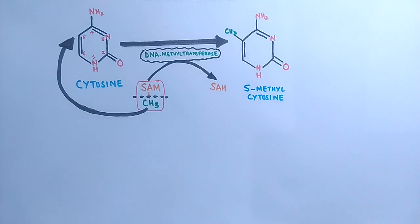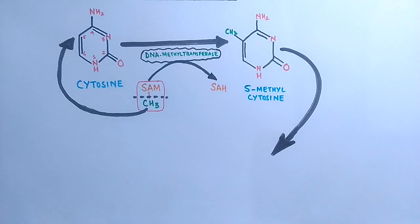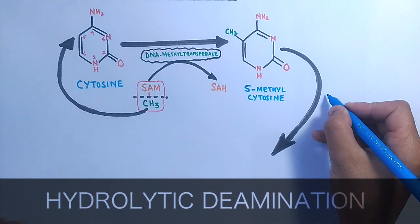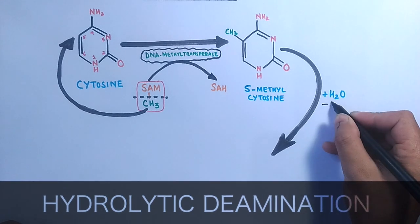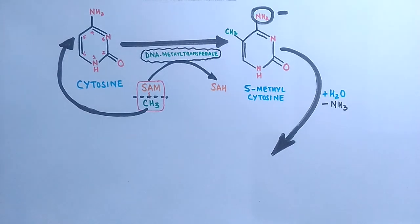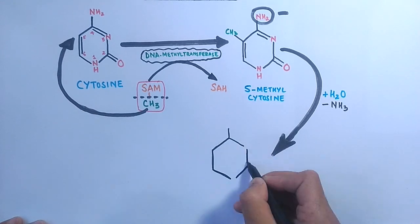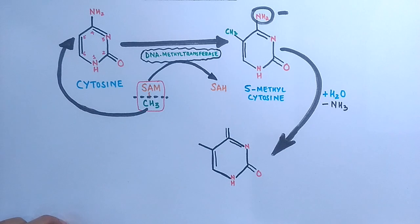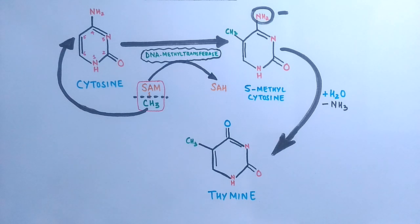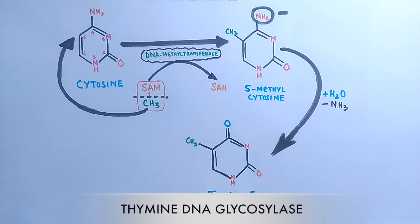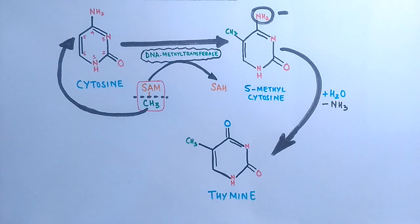However, 5-methyl cytosine is prone to deamination. Spontaneous hydrolytic deamination occurs when water is added, removing the amino group at the top of the pyrimidine ring and substituting it with oxygen, converting 5-methyl cytosine into thymine — thereby incorporating a single nucleotide mutation in the DNA. If detected, this G:T mismatch can be corrected by thymine DNA glycosylase, which removes the thymine base, leaving an abasic site repaired by AP endonucleases and polymerase enzymes.